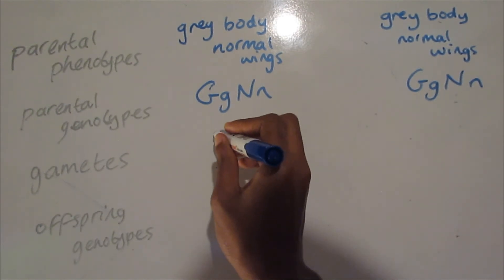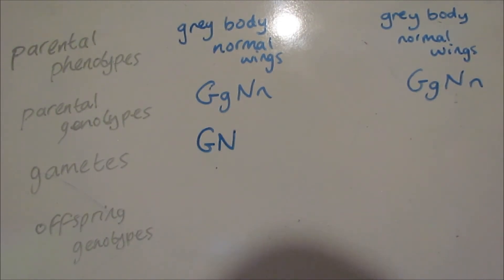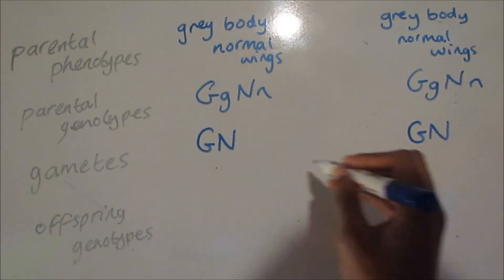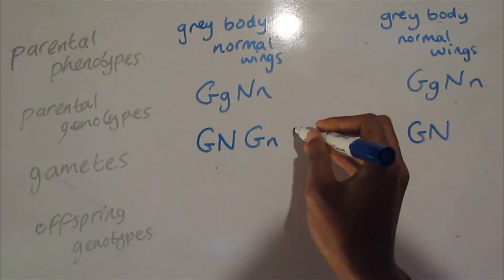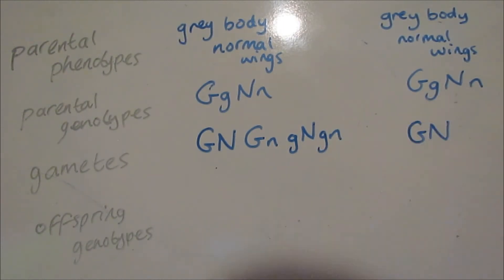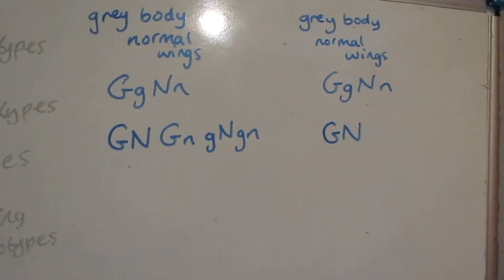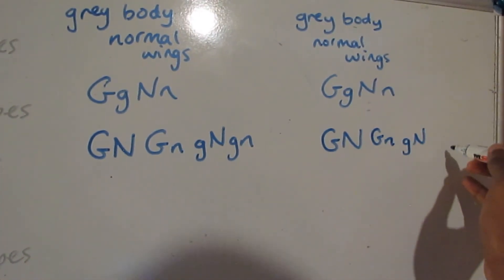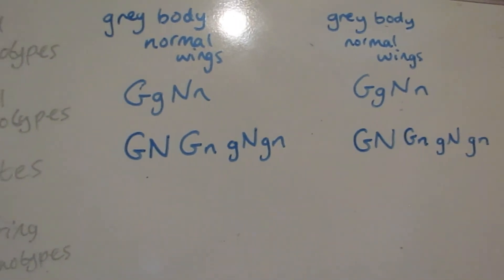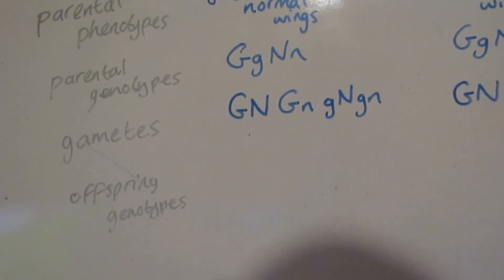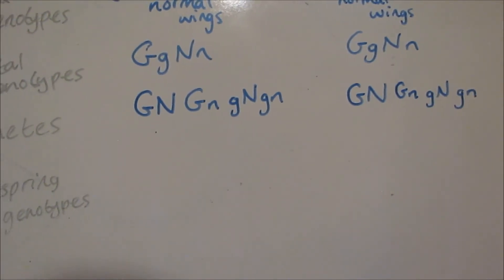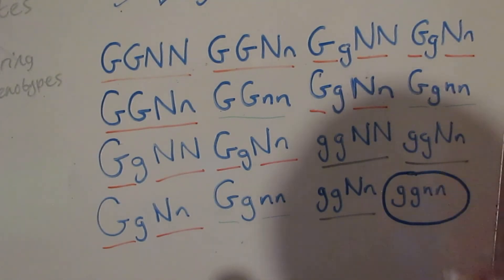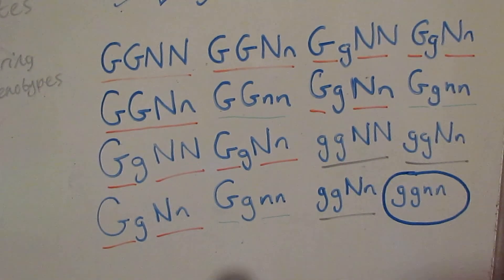Now let's consider the scenario where the genes are not linked — not appearing on the same chromosome. This is just like our normal dihybrid inheritance. If we think back to normal dihybrid inheritance, we come out with a ratio of 9:3:3:1, where nine of the offspring are dominant, one is homozygous recessive for both features, and two groups are heterozygous for the features.